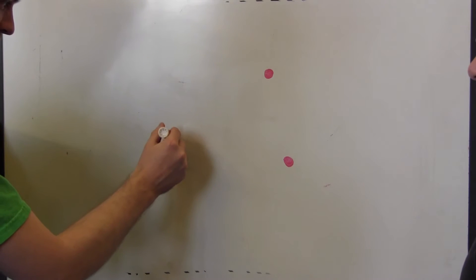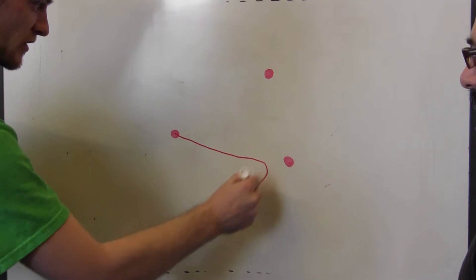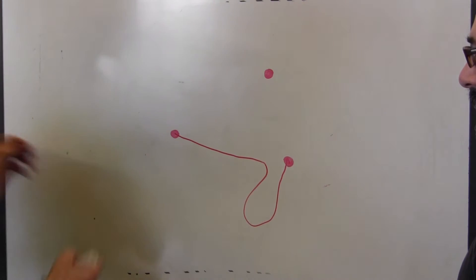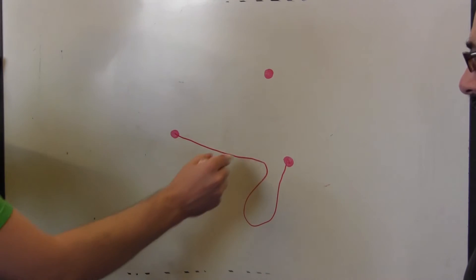So you choose two dots, and you connect them with a line, and it doesn't have to be a straight line, it just has to be a line that connects them. Okay. And then in the middle of that line you just drew, you draw a new dot.